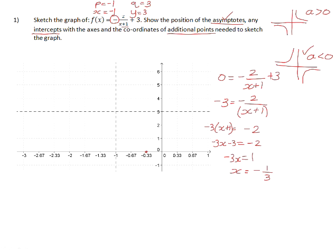To calculate the y-intercept, we set x equal to 0. Negative 2 divided by (0+1) is -2, and -2 + 3 = 1. So our y-intercept is positive 1. From the shape of the graph, this point lies below the horizontal asymptote and to the right of the vertical asymptote, and we sketch in that side of the graph.